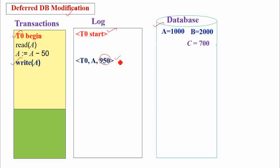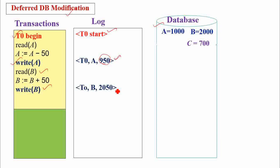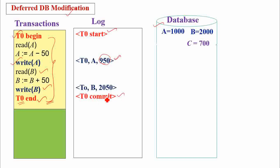Though the update record is made, the update is not applied to the database immediately — it is deferred until the successful commit. When write operation is performed on B, the update record is made. When T0 end is executed, meaning all operations in T0 are performed, T0 is said to be partially committed. Immediately, the commit record is made into the log, and only after this partial commit are the updates reflected into the database. The updated values of A and B, 950 and 2050, are reflected into the database now.